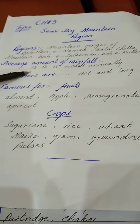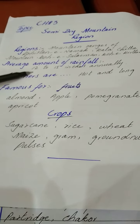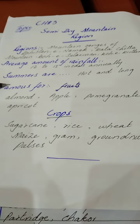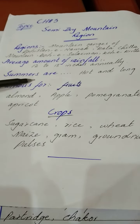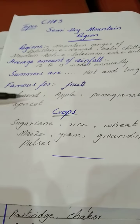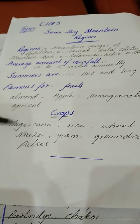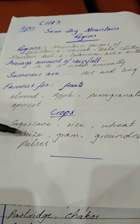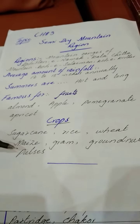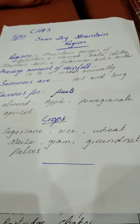The characteristics of the semi-dry mountainous regions are: the average rainfall is 12 to 15 inches annually, summers are hot and long, and the region is famous for the fruits and crops mentioned. You just have to learn about these crops and fruits of this region. Thank you so much.